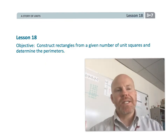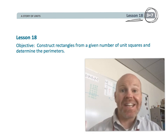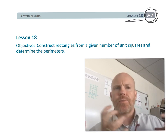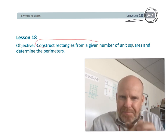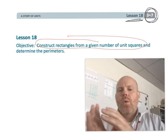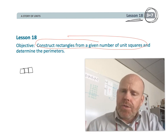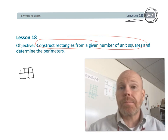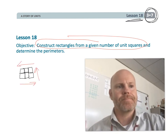This is Grade 3, Module 7, Lesson 18. Students are going to be constructing a whole bunch of different rectangles from a given number of unit squares. The idea is that all these different rectangles can be created with that same number of squares — so they all have the same area — and then we'll start looking at their perimeters and see what we notice.